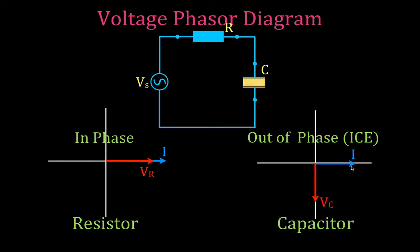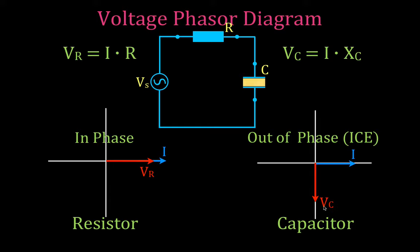The current leads the voltage — sometimes people say the voltage lags the current — and it's 90 degrees. We can calculate the voltage if we know the current and the resistance using Ohm's law: V equals I times R. The same applies for capacitive circuits: the voltage across the capacitor is I times XC, where XC is the capacitive reactance. Remember, resistors have resistance; capacitors have reactance.